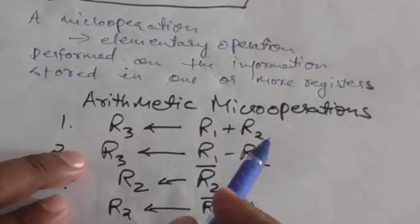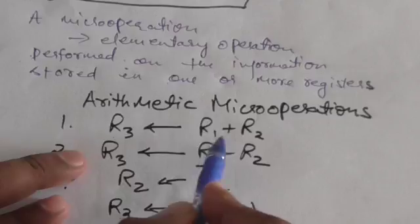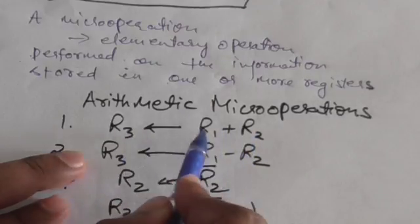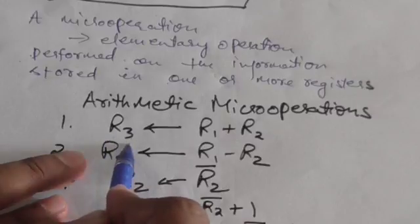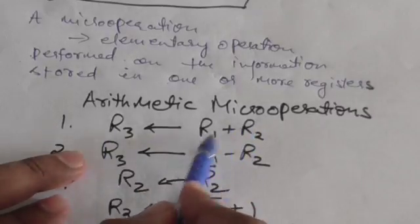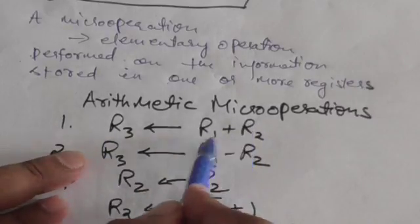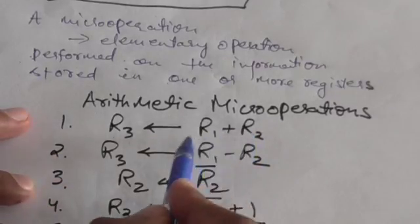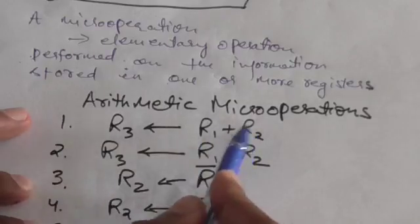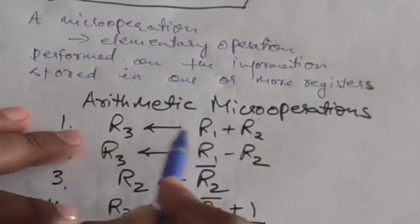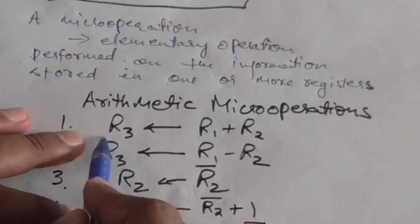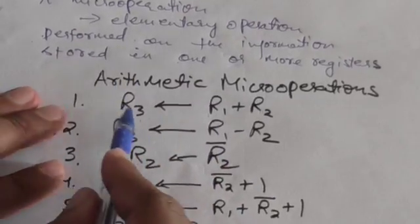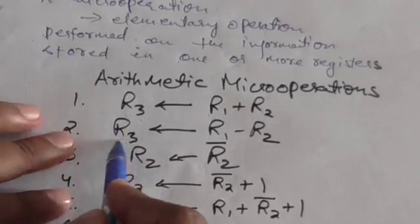This first statement represents a micro operation in which the sum of contents of registers R1 and R2 is transferred into register R3. There are two registers, R1 and R2, and they store some content. Whatever content is stored in R1 and R2, their sum is transferred into another register R3.